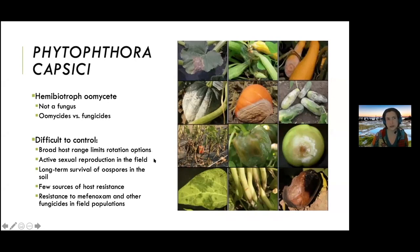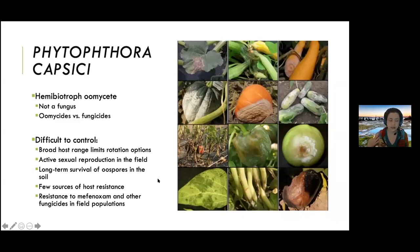This is a pathogen that has mating types. When they reproduce in the field, they generate a survival structure that is really hard to manage long term. We also have really few sources of host resistance, at least for watermelon. And because it actively undergoes sexual reproduction, it is able to develop fungicide resistance relatively easily, so we need to be monitoring fungicide resistance regularly.